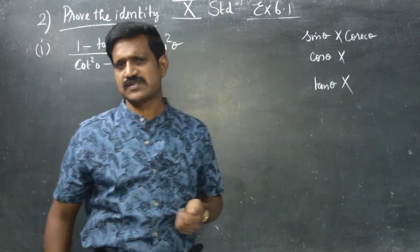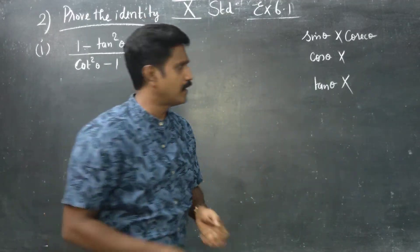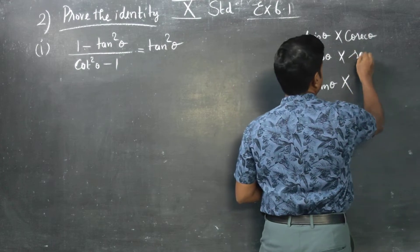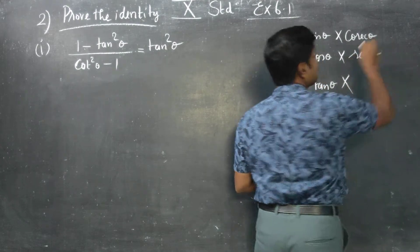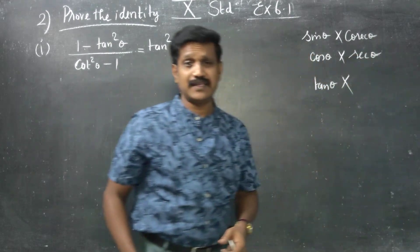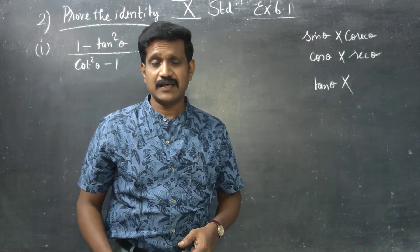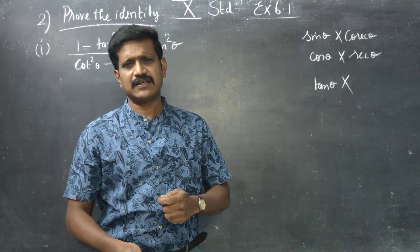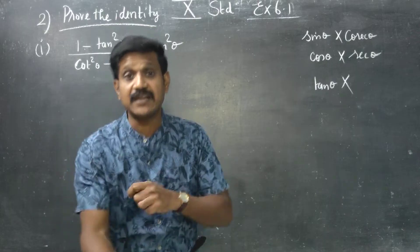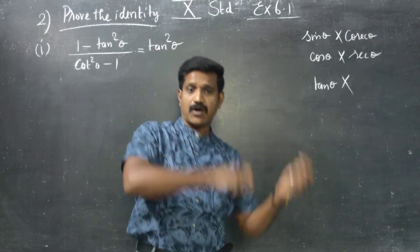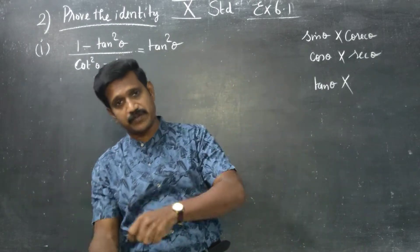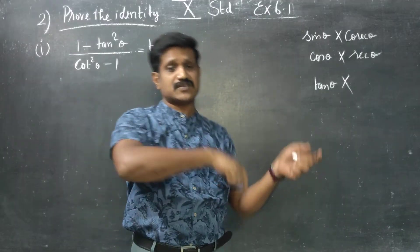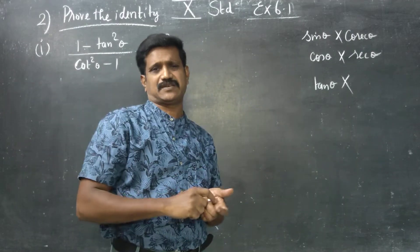cos theta and secant theta are reciprocals of each other. cos is equal to 1 by secant, and secant is equal to 1 by cos. They are opposite reciprocals.